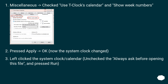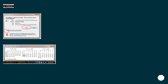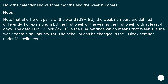Under Miscellaneous, checked 'Use T-Clock's calendar' and 'Show week numbers'. Pressed Apply and OK. Now the system clock changed. Left-click the system clock/calendar, uncheck 'Always ask before opening this file', and pressed Run. Now the calendar shows three months and the week numbers.